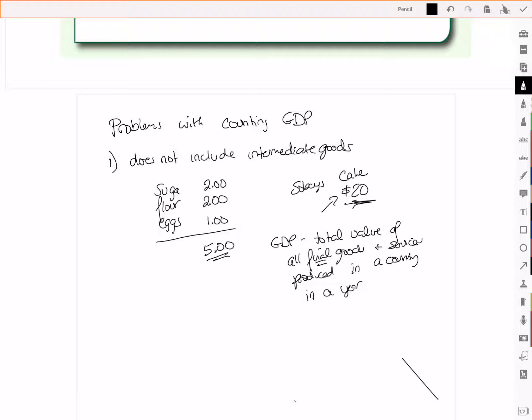However, the reason that we're just looking at the final goods is because we don't want to double count, which can make it a challenge. Because let's suppose that you make wedding cakes. Now if you go and you buy your materials, your sugar, your flour, and your eggs at Sobeys,